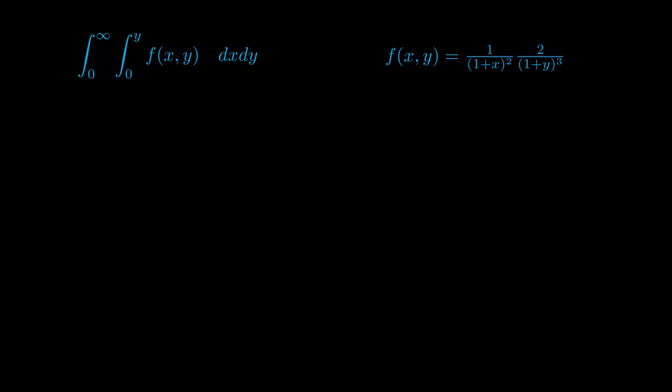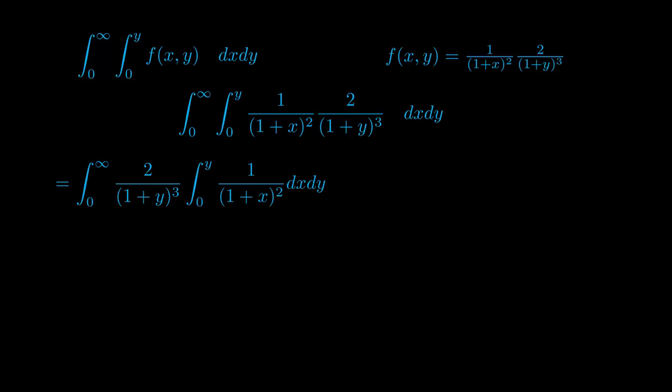Now that you have your joint distribution function, substitute back into the integral and start solving. This is what you need to be integrating. Because we are integrating first with respect to dx, 2 over (1 plus y) cubed can be treated as a constant. I can pull it outside the integral of dx and just compute that first.